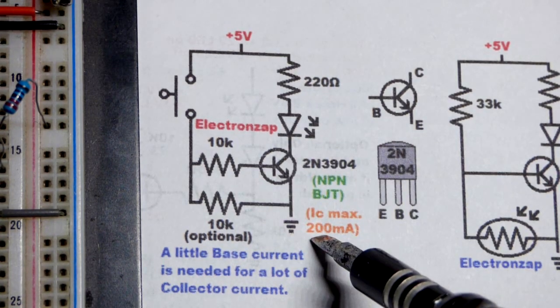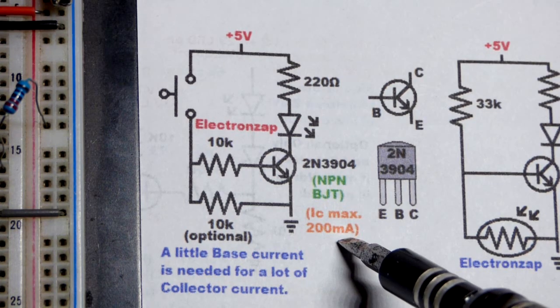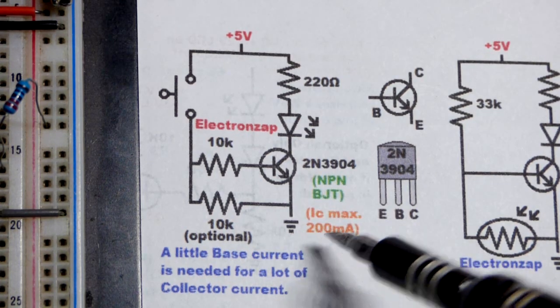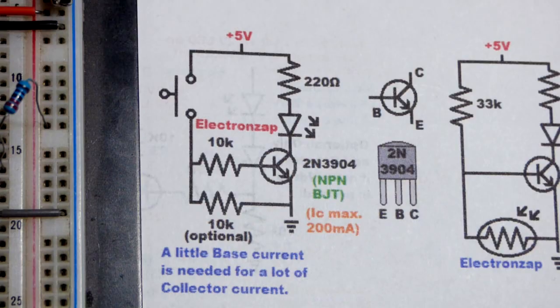Now the 2N3904 can only handle a maximum of 200 milliamps of current. So if you need more current, use a higher power transistor.